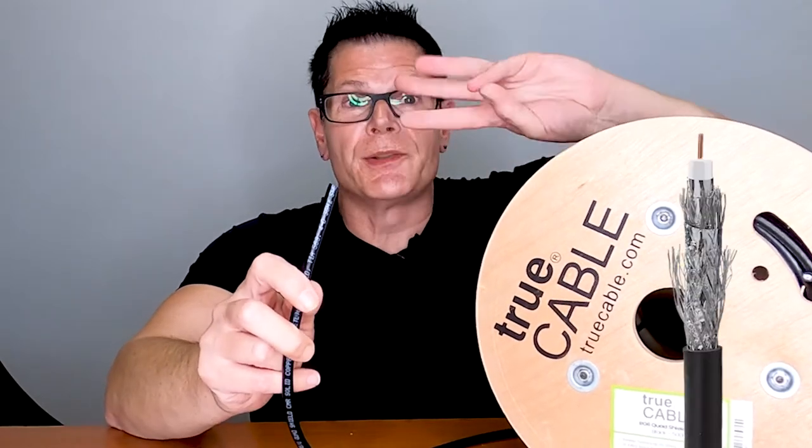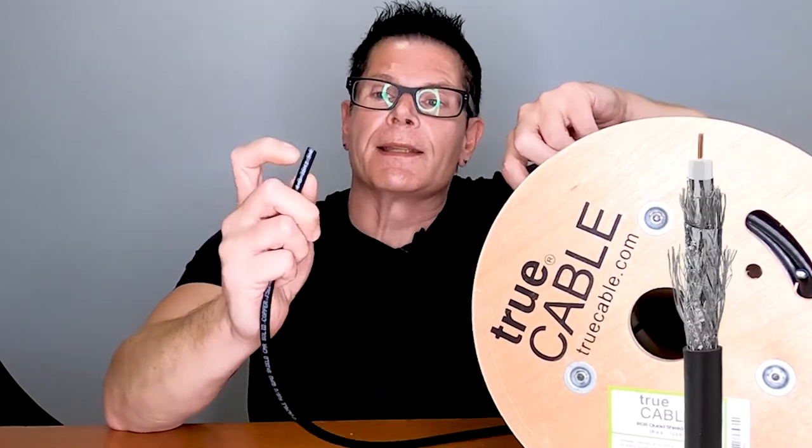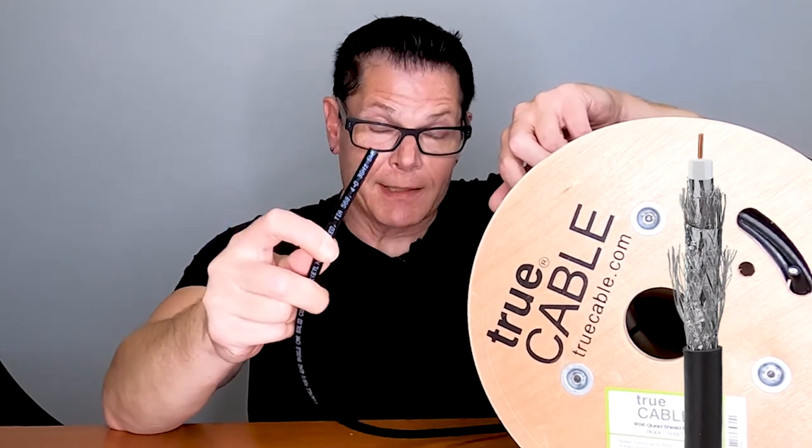Actually that would be probably more like RG11, but we're talking about RG6 coax here. This is quad shield, so it has two braid shields, two foil shields. It has a solid copper center conductor, so it's eminently suitable for satellite installation.